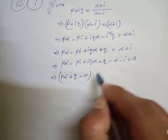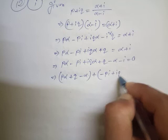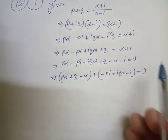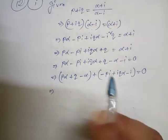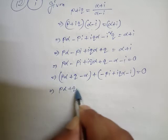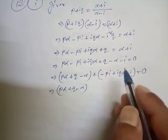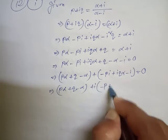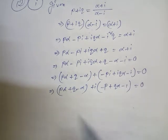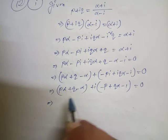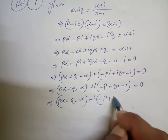And the imaginary part contains only i: -pi + iqα - i. Taking i common from the imaginary terms gives i(-p + qα - 1). So we have: pα + q - α + i(-p + qα - 1) = 0.